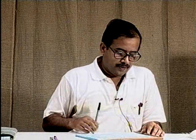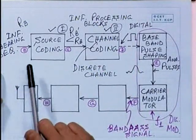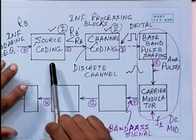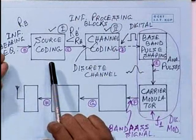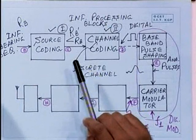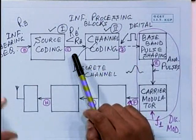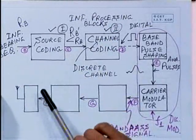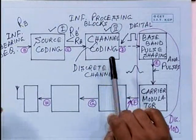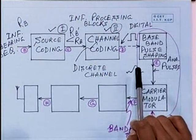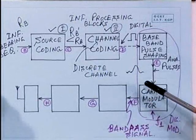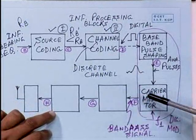If you remember, we were continuing with this particular diagram where we had an information-bearing sequence at the input, followed by two blocks which I broadly called information processing blocks. The first one, after understanding, has something to do with the information coming from an information source — we called this the source coding block. The overall aim was to see that the bit rate reduces after the source coding operation, so that the bit rate after source coding rb-prime is less than rb, the input bit rate.